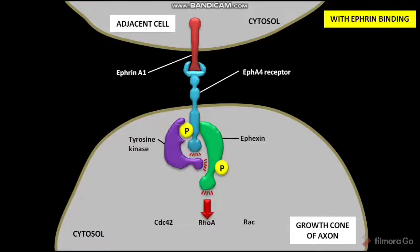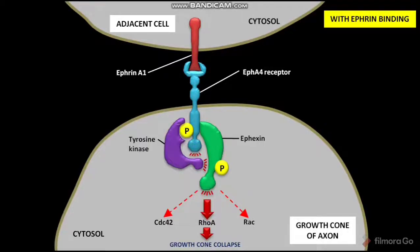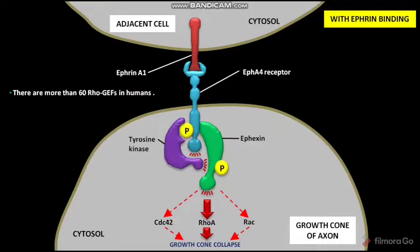The active Rho-A then causes the growth cone to collapse. Besides Rho-A, the active Afaxin also activates Cdc42 and Rac. The active Cdc42 and Rac also cause the growth cone to collapse. There are more than 60 Rho-GEFs in humans.